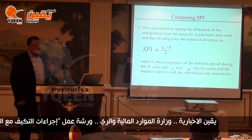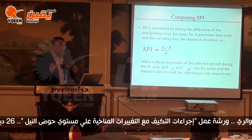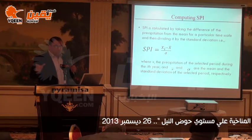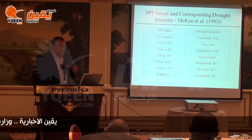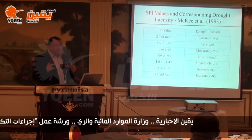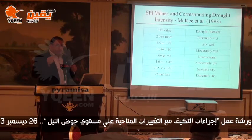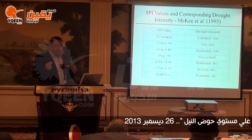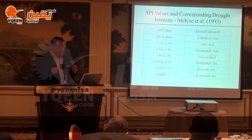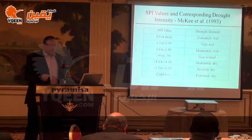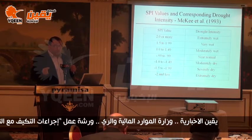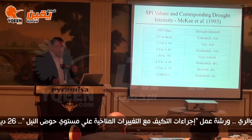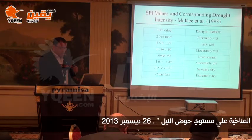To compute the SPI simply: it is calculated by taking the difference of the precipitation from the mean of the particular time scale — at least 30 years — and then dividing by the standard deviation. The resulting SPI values reflect the magnitude of the event. For example, an SPI value of 2.0 indicates an extremely wet event, 1.5 to 1.99 is very wet, and down to minus 2.0 is extremely dry, as shown in the table.